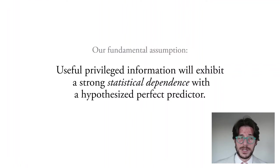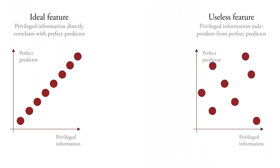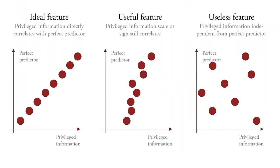Our fundamental assumption is that useful privileged information will exhibit a strong statistical dependence with a hypothesized perfect predictor. So why might this be a good assumption? Well, suppose the privileged information feature were ideal, then it would exactly correlate with the perfect predictor. Similarly, suppose the privileged information were useless, then it would be independent from the perfect predictor. We might expect the privileged information to be somewhat useful. For instance, its scale or even just its sign might correlate with the perfect predictor. But in each case, we consider every point in the dataset rather than the local neighborhood structure.